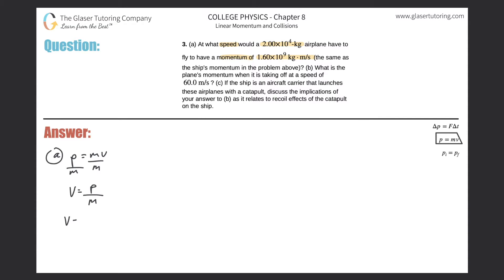Therefore, the velocity of the airplane is equal to the momentum of that airplane, which they told us was 1.6 times 10 to the 9, divided by the mass of that airplane, which was 2.00 times 10 to the 4th.